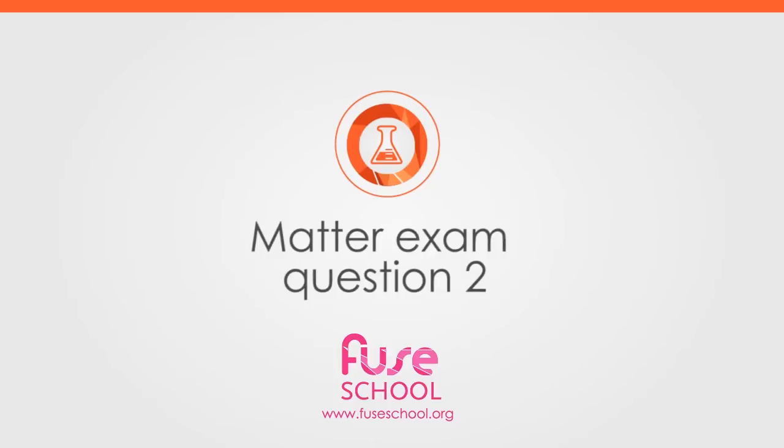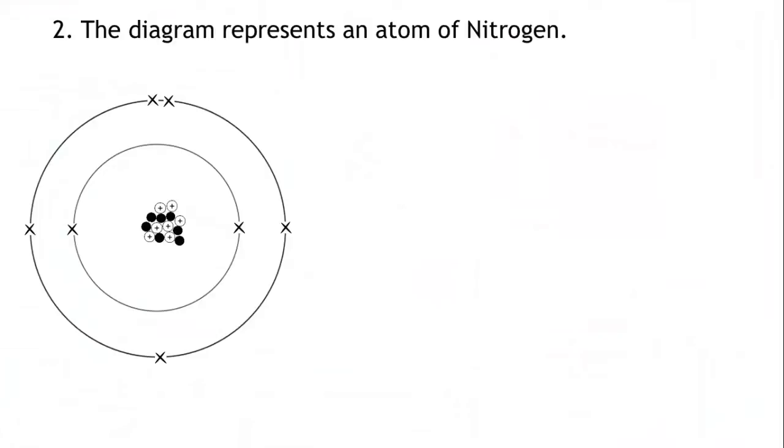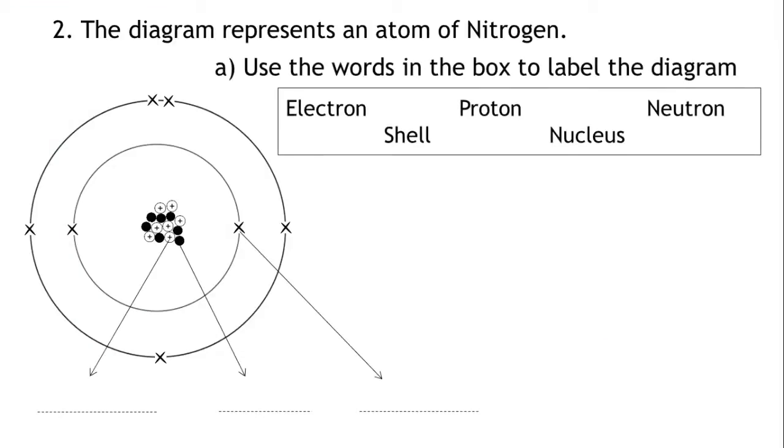Question two. The diagram represents an atom of nitrogen. Part A: Use the words in the box to label the diagram. Electron, proton, neutron, shell, nucleus.